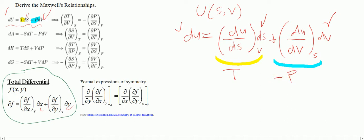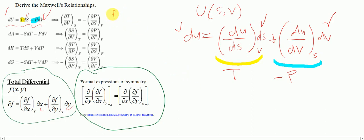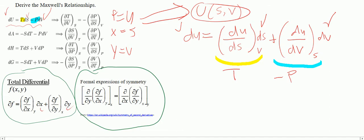After identifying that, we can use another mathematical concept called the formal expressions of symmetry, or the double equivalence, represented here. We apply it in the same way as the total differential, with f equal to u, x equal to S, and y equal to V. So we have d/dV of (∂u/∂S at constant V).